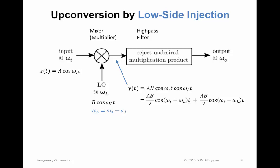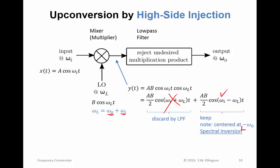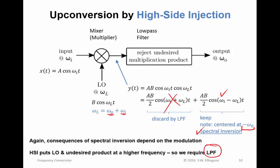Now, up conversion. Again, for up conversion we have two options: low side and high side. For low side up conversion, the LO frequency will be the difference between the output frequency and the input frequency. We keep the sum term and discard the difference term using a high pass filter. For high side injection, the LO frequency is the sum of the output and input frequencies. We discard the sum frequency and keep the difference frequency — but note this difference frequency results in a signal centered at −ω_0, so we again have spectral inversion. We're interested in high side injection because it puts the LO and undesired product at higher frequency, so we can use a low pass filter instead of a high pass filter.